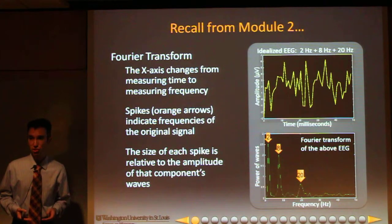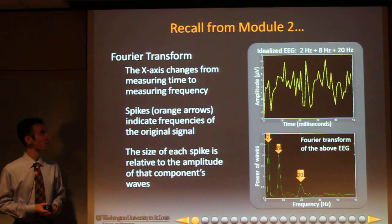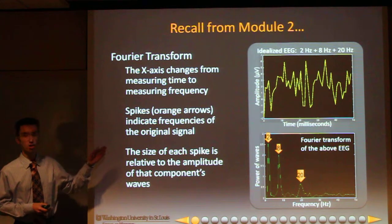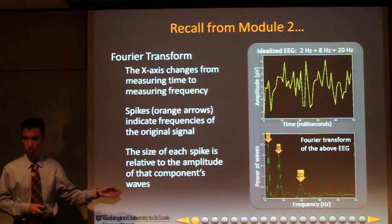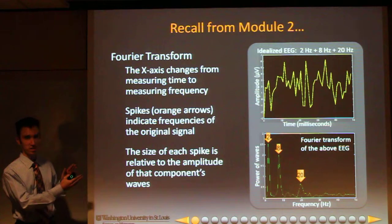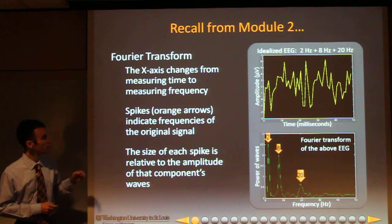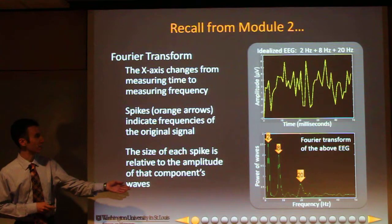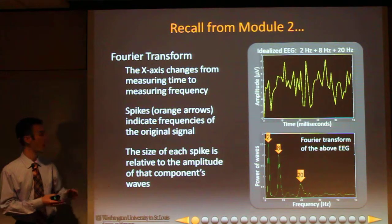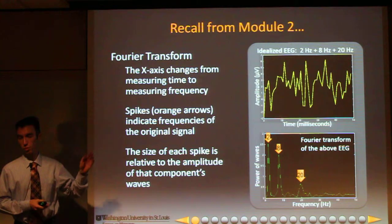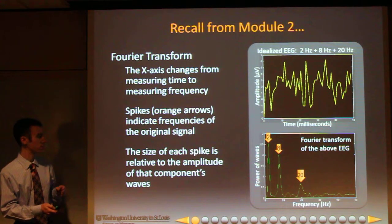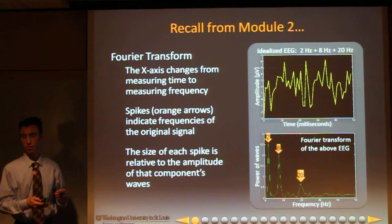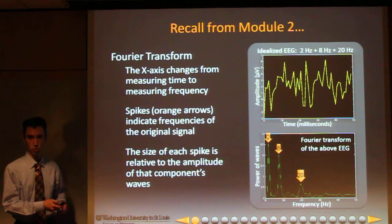You will recall from Module 2 that when we take the Fourier transform of a signal, we move from the time domain, shown in the upper panel, to the frequency domain, shown on the lower panel. So the horizontal axis changes from time to frequency. The spikes in the frequency domain indicate frequencies that are present in high amplitude in our original signal. The size of each spike is relative to the amplitude of that frequency present in our original waveform.